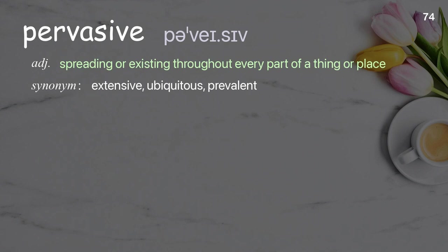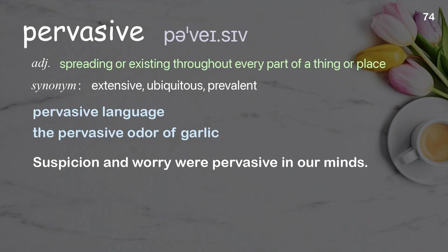Pervasive: spreading or existing throughout every part of a thing or place. Examples: pervasive language, the pervasive odor of garlic. Suspicion and worry were pervasive in our minds.